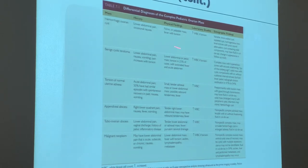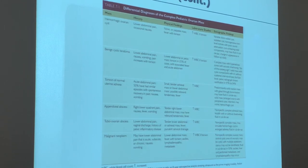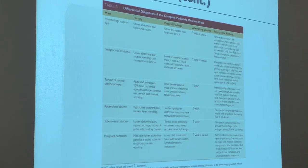A hemorrhagic ovarian cyst means there is bleeding. For example, a corpus luteum that has bled within itself becomes a hemorrhagic corpus luteum. It could appear complex and have septations depending on the age of the blood. When it first bleeds it's hyperechoic, and as the blood settles it can develop septations, turn anechoic, or show nodular components.